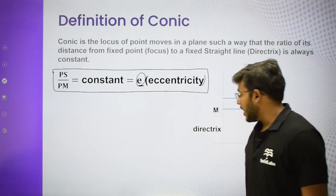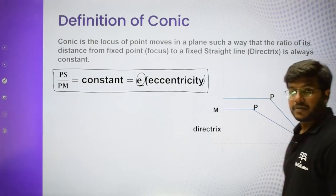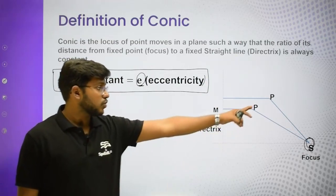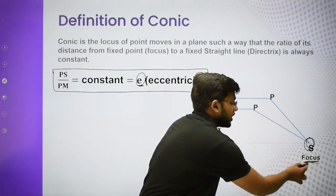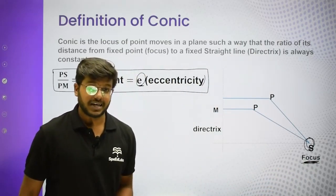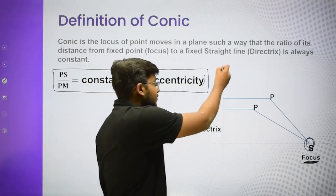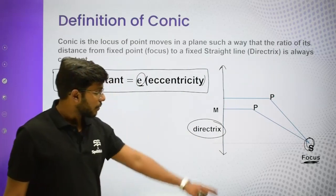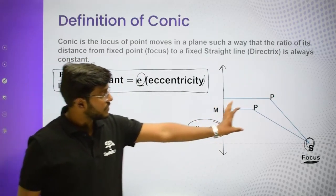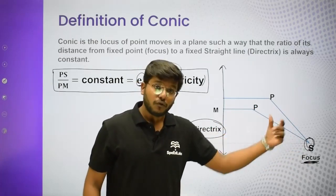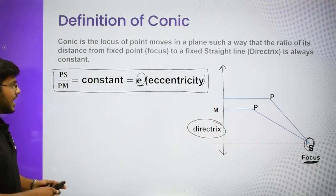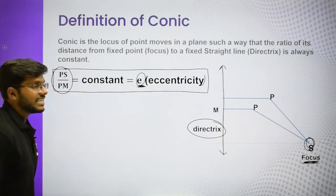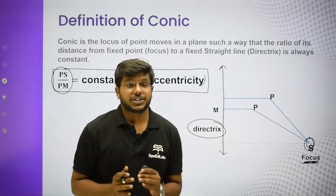The fixed point in this definition is called the focus of the conic, and the fixed line is called the directrix of the conic. So to summarize: in the numerator we always put the distance from the focus, divided by the distance from the directrix line. For every conic, this ratio is a constant called the eccentricity.